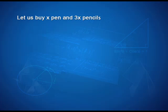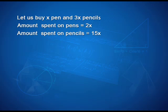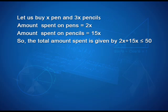Let us consider a real-life problem. If you go to the market with ₹50 to buy some pens and pencils worth ₹5 and ₹2 respectively, under a condition that you are buying 3 times the number of pencils as the number of pens — let us buy x pens and 3x pencils. The amount spent on pencils would be 15x rupees, so the total amount spent is 2x + 15x, and since I have ₹50 in hand, the amount spent should be less than or equal to 50.